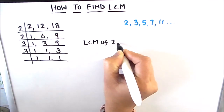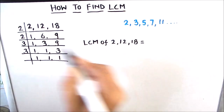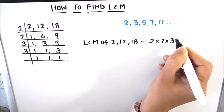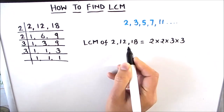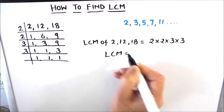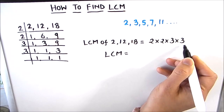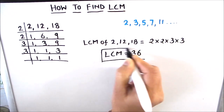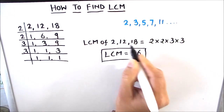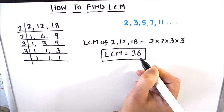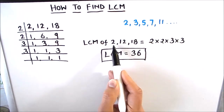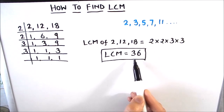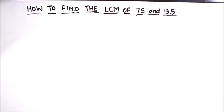Now that all numbers are fully divided, the LCM is the product of all the numbers on the left-hand side of the ladder: 2×2×3×3. Let's calculate: 2×2=4, 4×3=12, 12×3=36. So the LCM of 2, 12, and 18 is 36. You can verify: 2×18=36, 3×12=36 — so 36 is indeed the least common multiple of all three numbers.